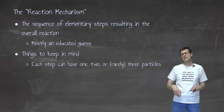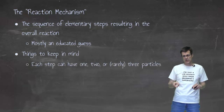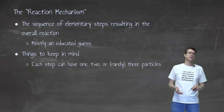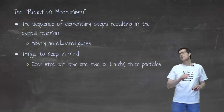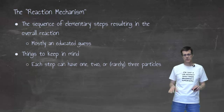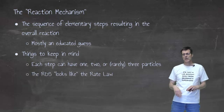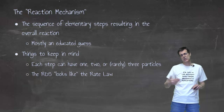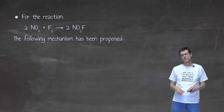So how do we make a good guess? Each step is going to have one or two — very, very rarely three — particles colliding together. For us, never three, just one or two. The rate determining step should look a lot like the rate law, and I'll show you what I mean by that in a minute. The other thing is to work toward your target reaction.